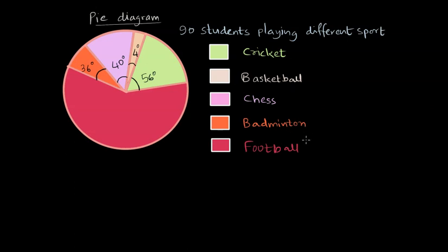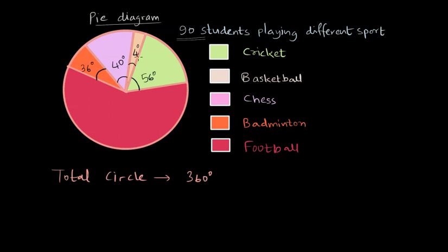For example, cricket, badminton, or football. We know the total number of students is 90. If we want to find out how many play cricket, we look at the central angle of the green sector, which subtends 56 degrees. The total circle refers to 360 degrees. If everybody played cricket, the circle would all be green and the central angle would be 360 degrees, but here it's not 360 degrees — rather it's 56 degrees.